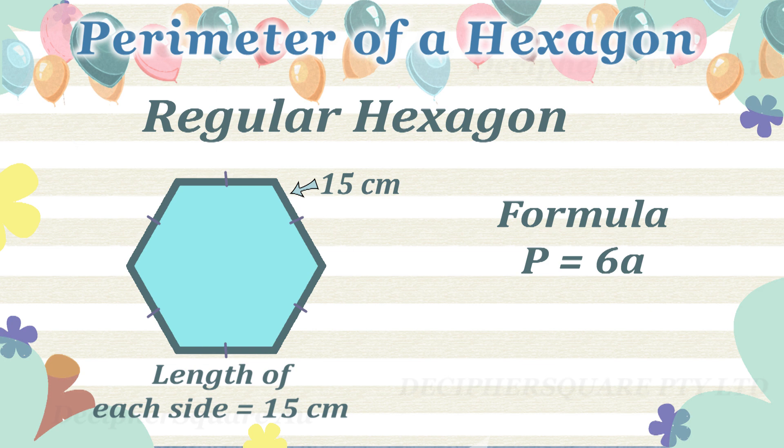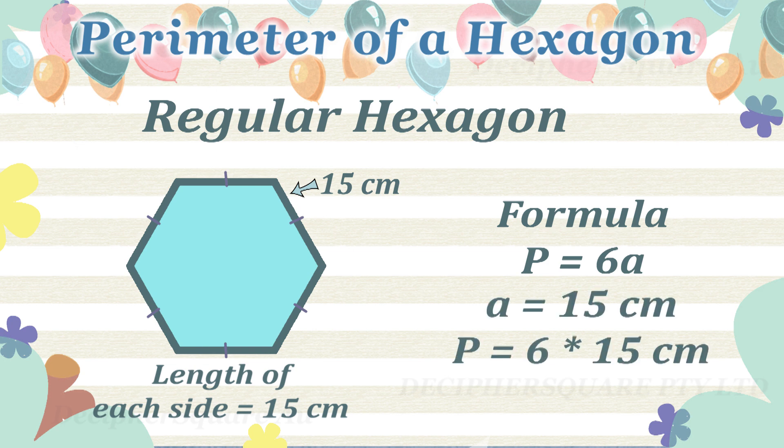Here, a is equal to 15 cm. So the perimeter is equal to six multiplied by 15 cm, which is 90 cm.